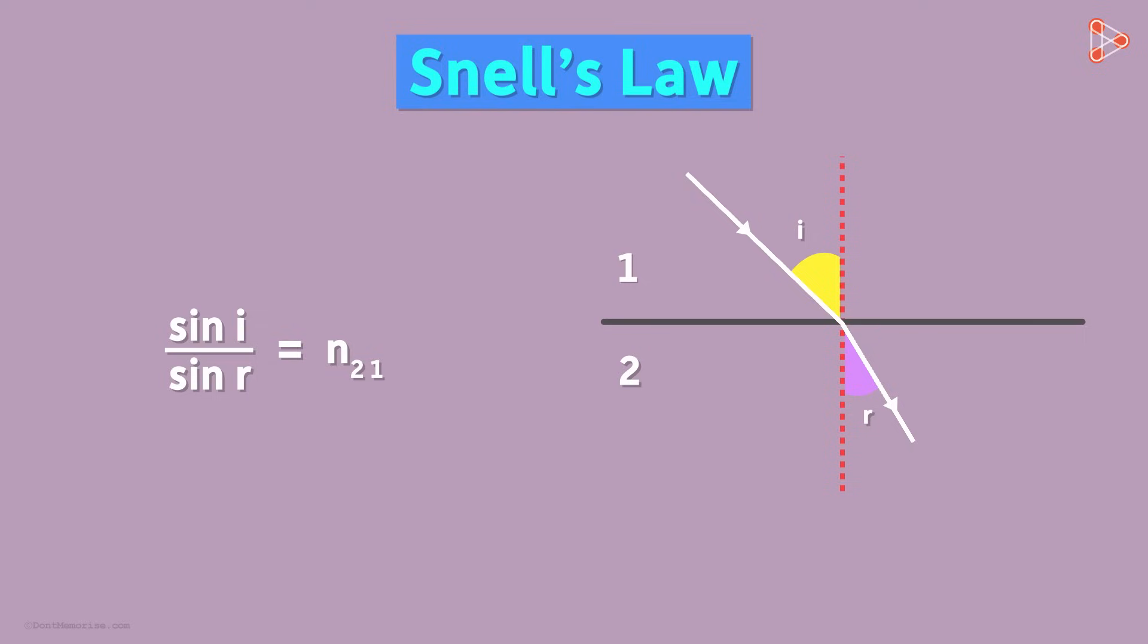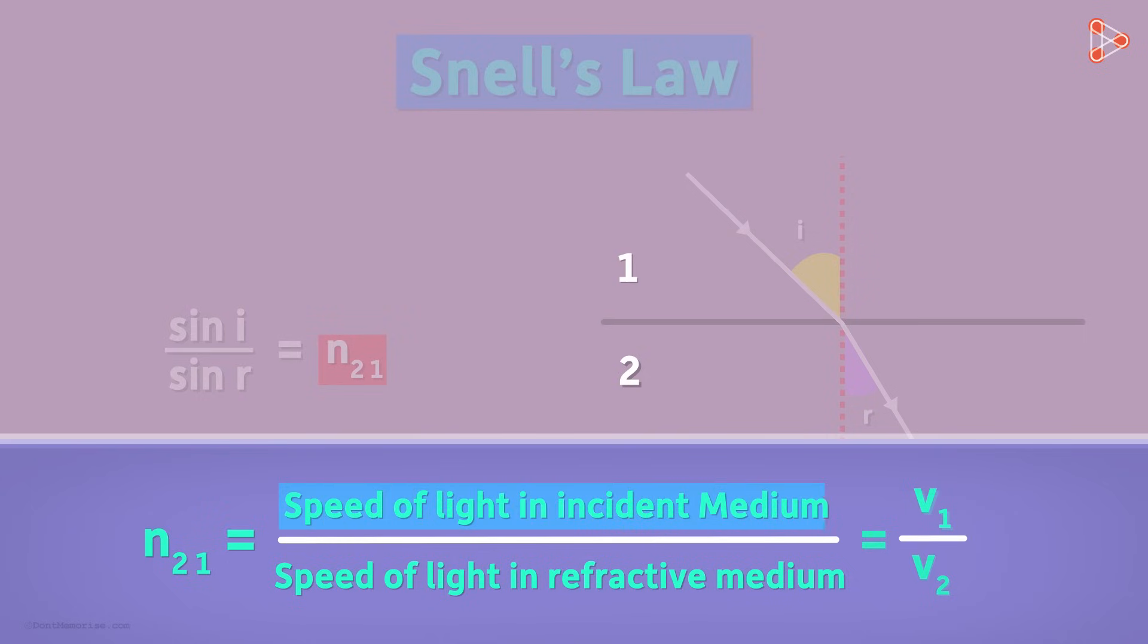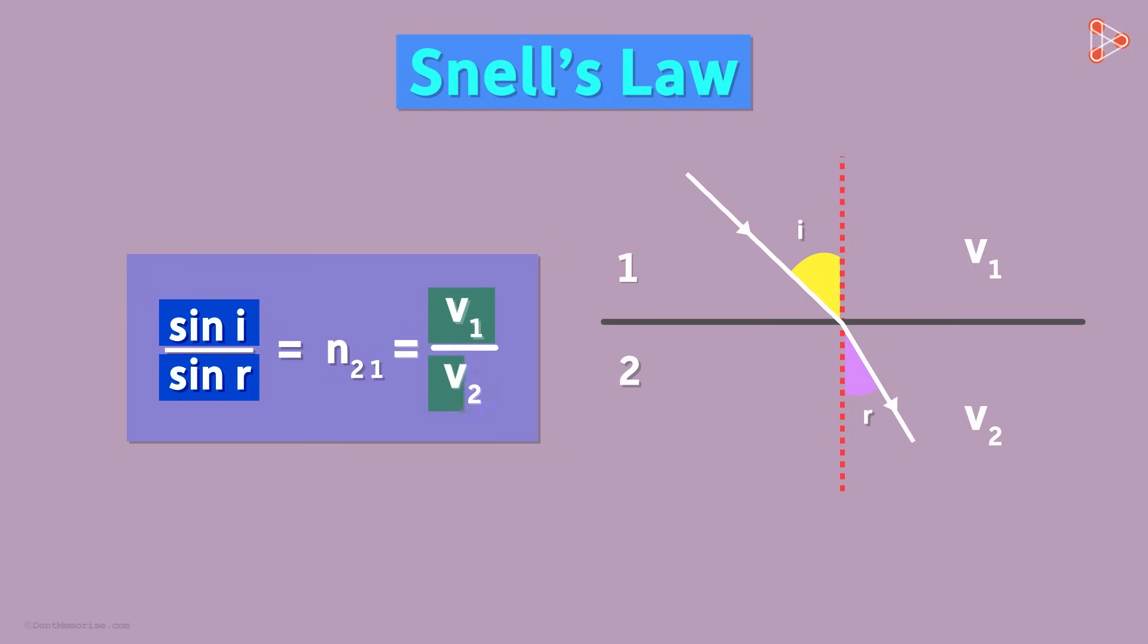There are different ways in which we can understand it. In the previous video, we'd seen what N21 means. It is equal to the ratio of speed of light in the incident medium to the speed of light in the refractive medium. So we can also say that sine i over sine r is V1 over V2.